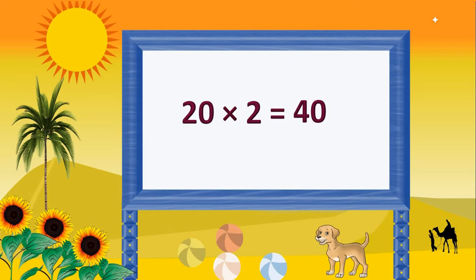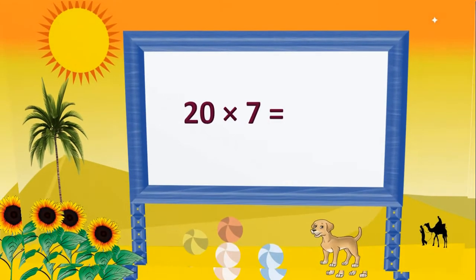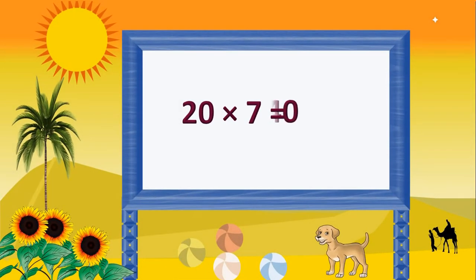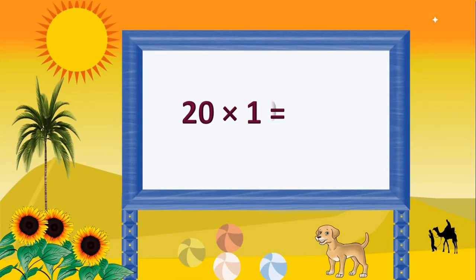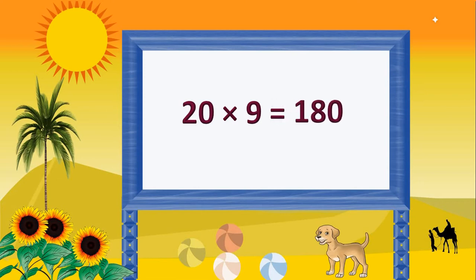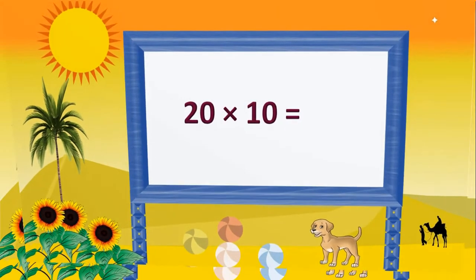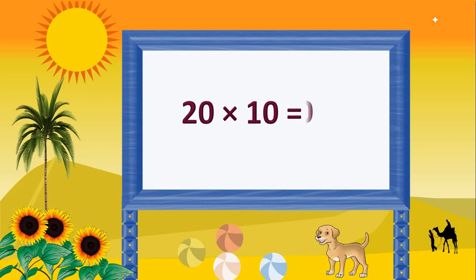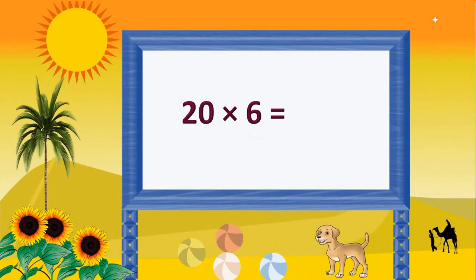Practice the 20 times table. 20 times 3 is 60, 20 times 5 is 100, 20 times 8 is 160, 20 times 2 is 40, 20 times 7 is 140, 20 times 1 is 20, 20 times 9 is 180, 20 times 4 is 80, 20 times 10 is 200, 20 times 6 is 120.